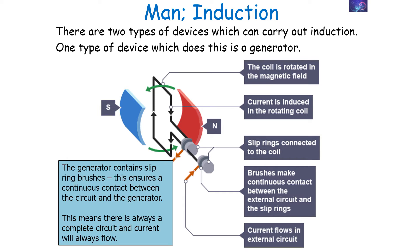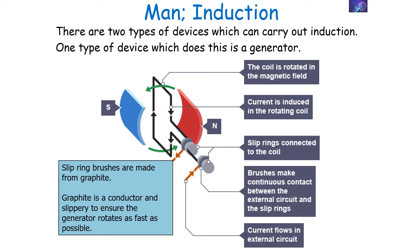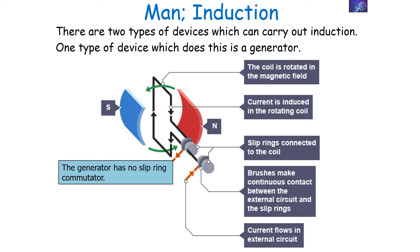The generator contains slip ring brushes, which ensures continuous contact between the circuit and the generator, meaning there's always a complete circuit and current will always flow. The slip ring brushes tend to be made from graphite — it's a conductor and it's slippery, so it allows the generator to rotate as fast as possible while still maintaining that connection to the circuit.